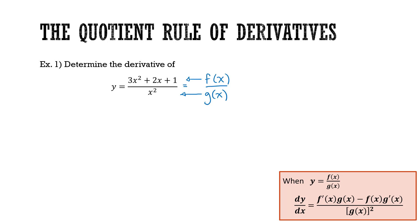The rule for this derivative is listed here in the bottom right corner. When we have a quotient between two functions f of x and g of x, we take f prime of x times g of x — the derivative of f of x times the original g of x. Now pay attention: we get minus instead of plus, so that's subtraction. Then minus f of x times g prime of x — the original f of x times the derivative of g of x — all divided by the original g of x squared.